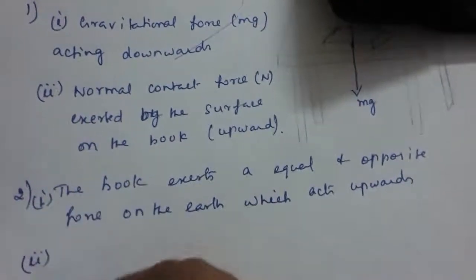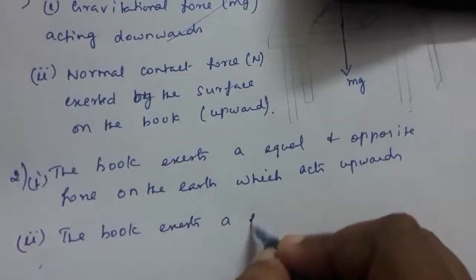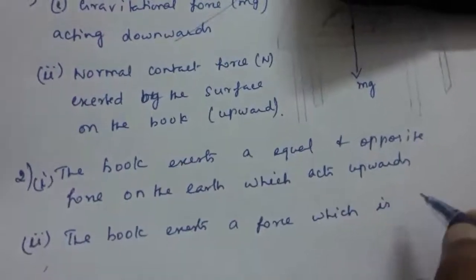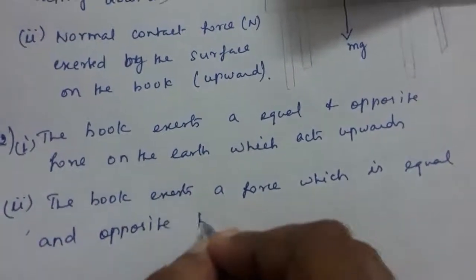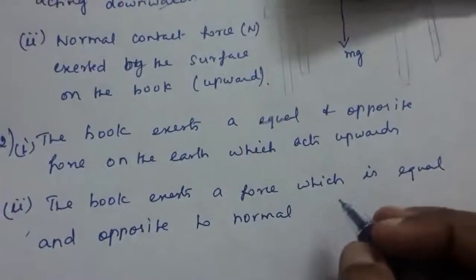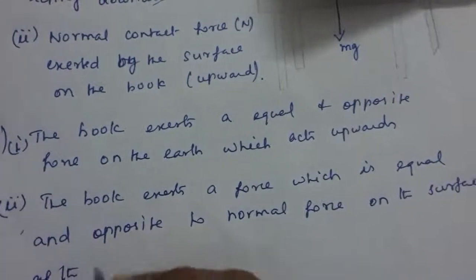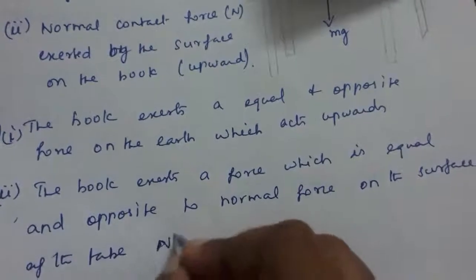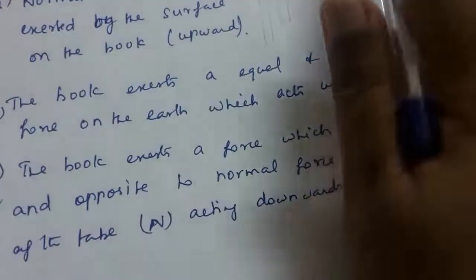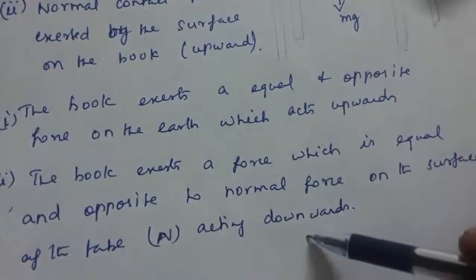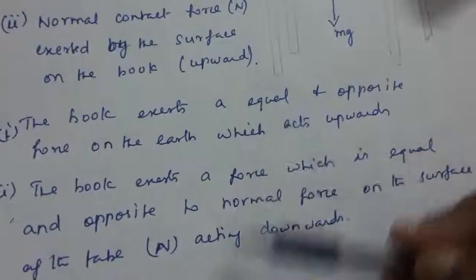The second force: the book exerts a force equal and opposite to the normal force on the surface of the table, which acts downwards. So while the normal force acts upwards on the book, the book exerts an equal and opposite force downwards on the table surface. The force exerted by the book is just the opposite of the forces acting on it.